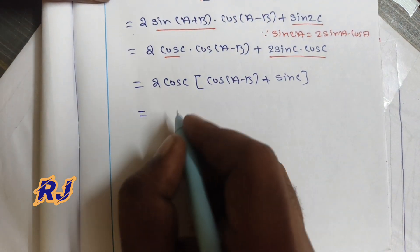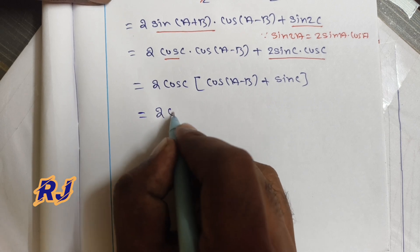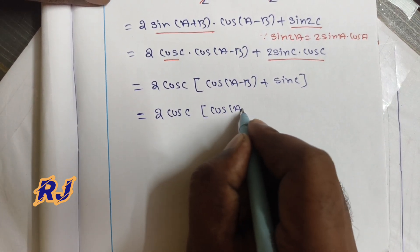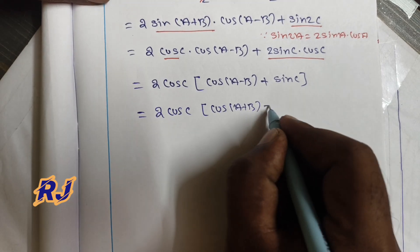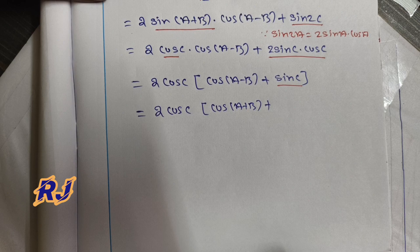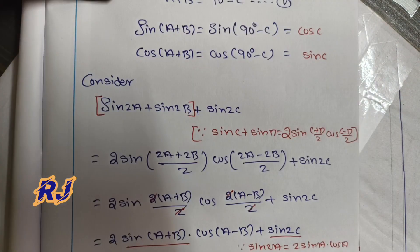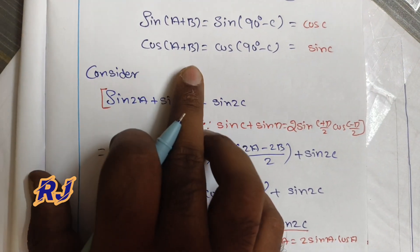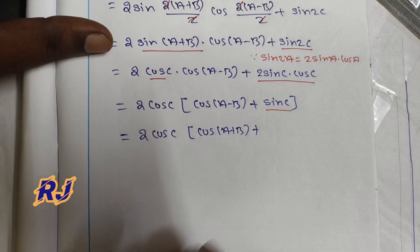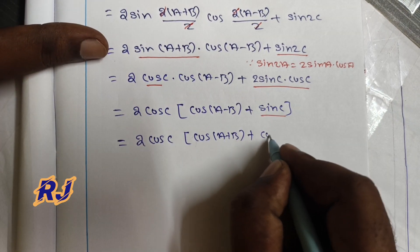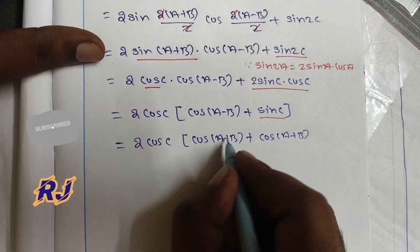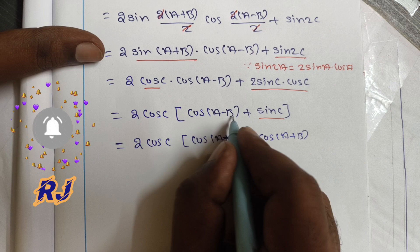Next step: we have 2 cos c into cos(a minus b) plus 2 sin c cos c. Now we substitute cos(a+b) using cos(a+b) equals sin c. This gives 2 cos c into cos(a minus b) plus 2 cos c into sin c. Then replacing sin c with cos(a+b), we get 2 cos c into cos(a minus b) plus 2 cos c into cos(a plus b).